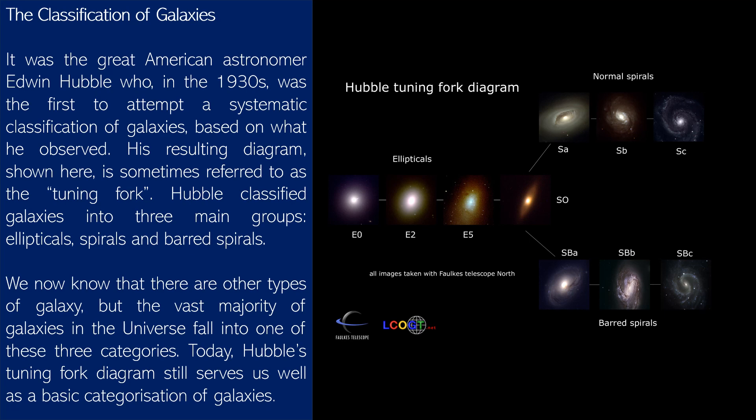Hubble classified galaxies into three main groups: ellipticals, spirals, and barred spirals. We now know that there are other types of galaxies, but the vast majority fall into one of these three categories. Today, Hubble's tuning fork diagram still serves us well as a basic categorization of galaxies.